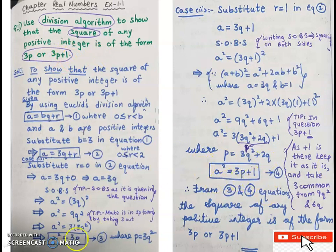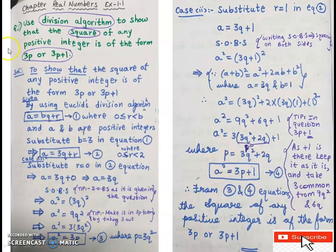Equation 3 is a² = 3p (case 1) and equation 4 is a² = 3p + 1 (case 2). Both are the square of an integer. Therefore, the square of any positive integer is of the form 3p or 3p + 1.